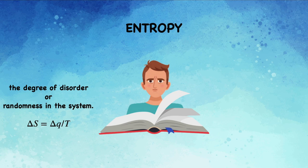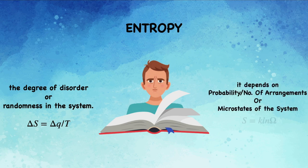It is given by ΔS = Δq/T whereas we have another definition based upon statistical thermodynamics which says that it depends upon the probability or the number of arrangements or the microstates of the system and it is denoted by S = k ln ω.